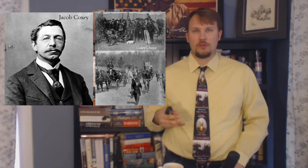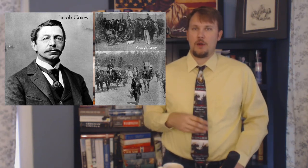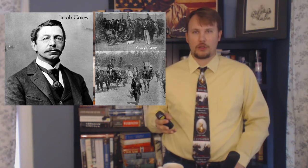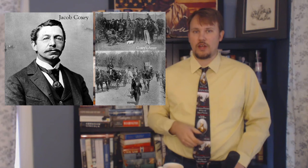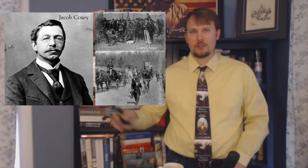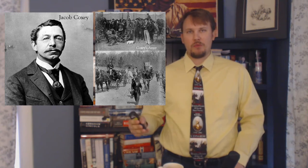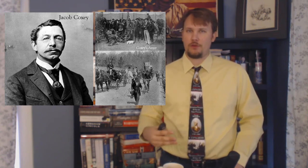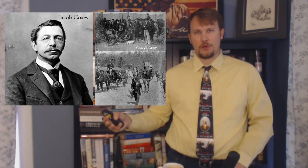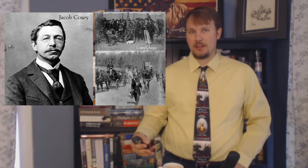Coxey was going to present Congress with a petition to give unemployed Americans jobs building roads, schools, and other infrastructure. But when Coxey marched to the Capitol, he was arrested for walking on the grass, fined $5, and sentenced to 20 days in jail — he never got to present his petition. Remember this when we get to the 1930s and the Great Depression, when people start demanding help from the government and Franklin Roosevelt totally changes American politics.